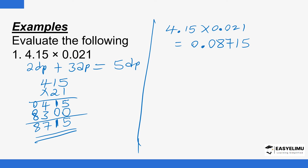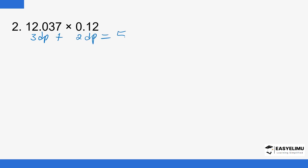For the next example: here there are three decimal places and here there are two decimal places, giving five decimal places in total. Disregarding the decimal point gives 12037 multiplied by 12. Digit 2 has total value 2: 2 by 7 is 14, so 4 carry 1; 2 by 3 is 6 plus 1 is 7; 2 by 0 is 0; and 2 by 2 is 4.